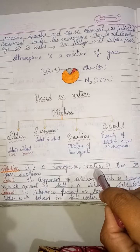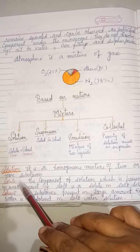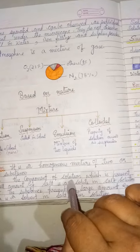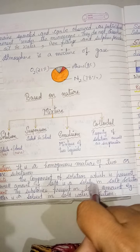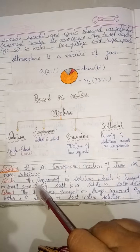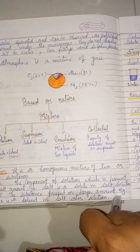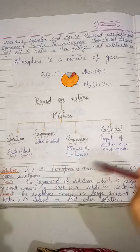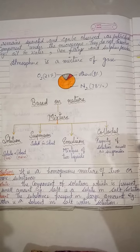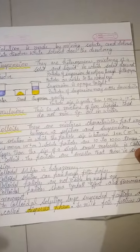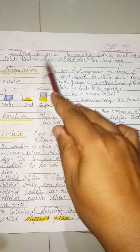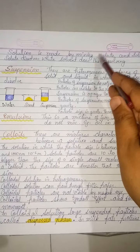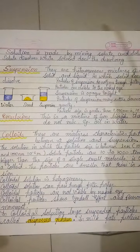A solution is a homogeneous mixture made up of solute and solvent. Solute is present in small quantity — for example, salt is the solute in a salt water solution. Solvent is the substance present in large quantity — water is the solvent in salt water solution. Solute dissolves while the solvent does the dissolving.